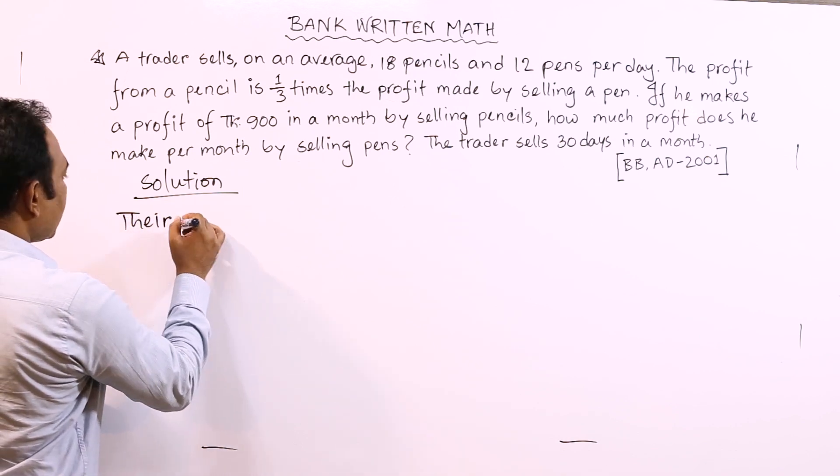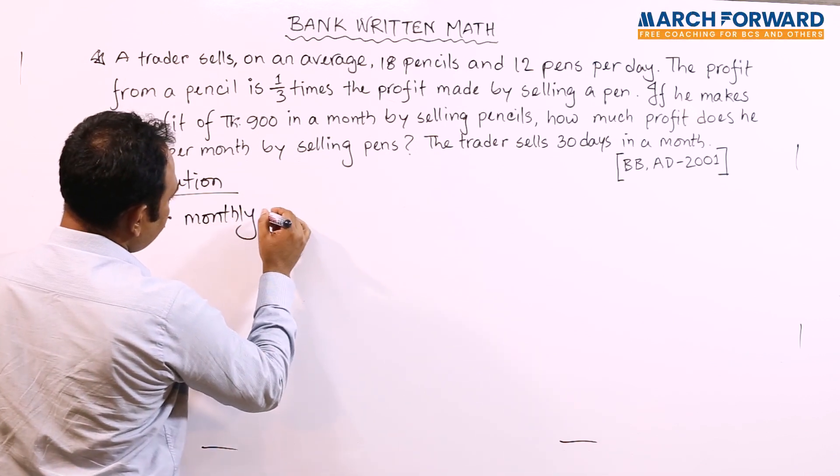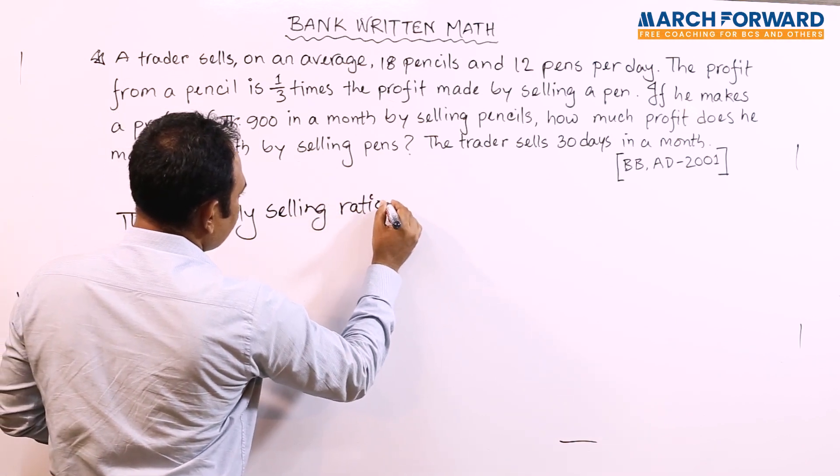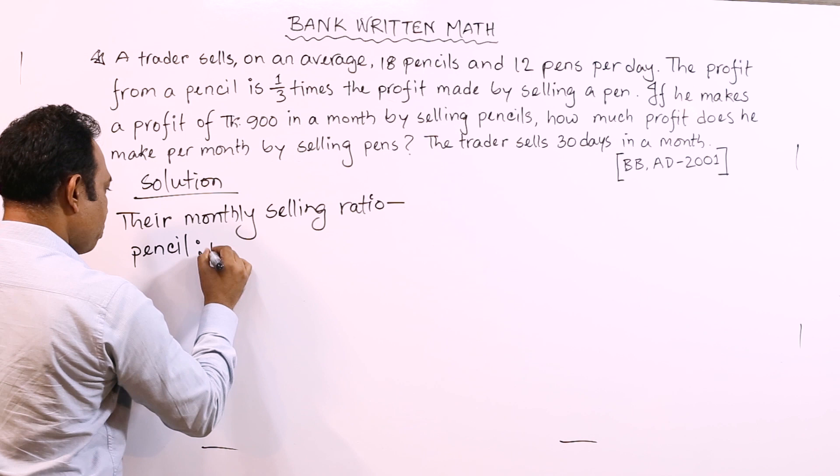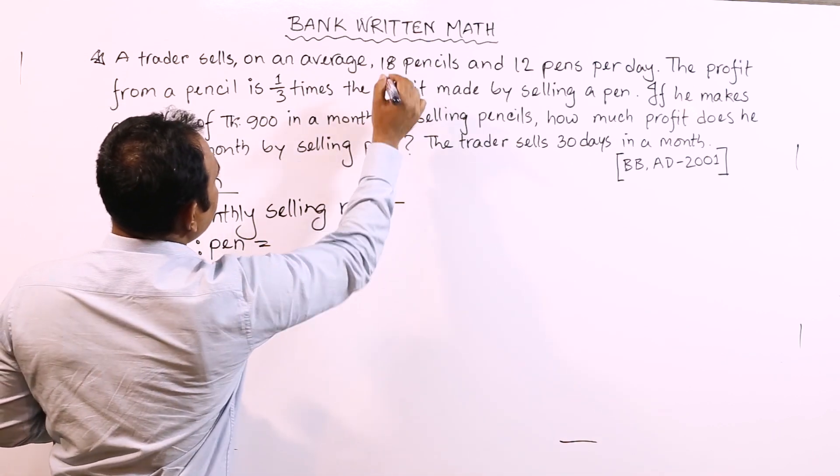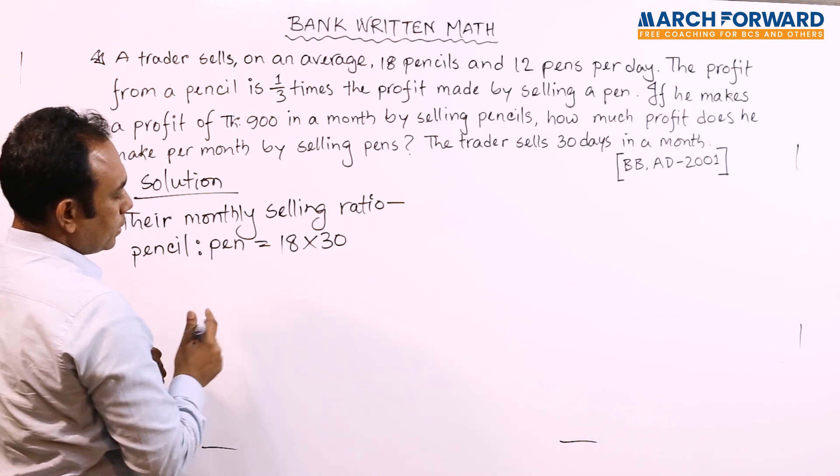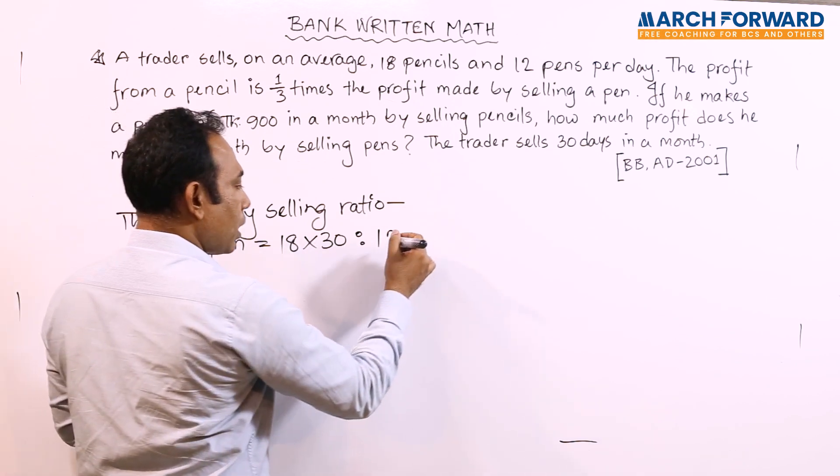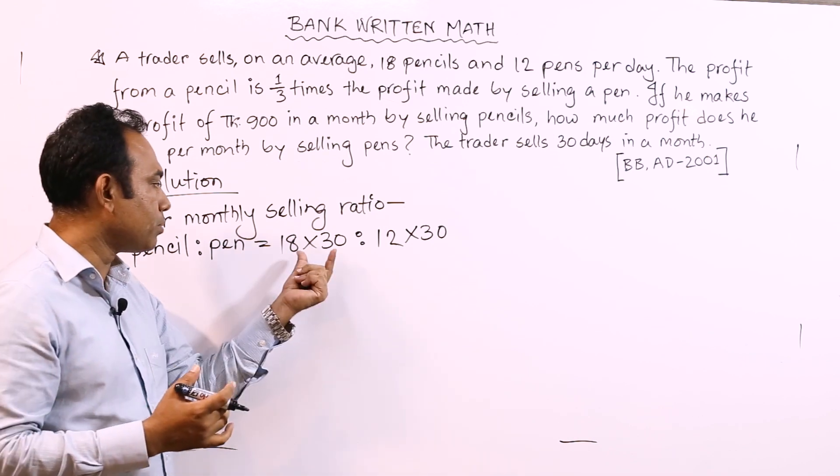Their monthly selling ratio - pencil to pen equals 18 times 30 to 12 times 30, which equals 540 to 360, which simplifies to 3 to 2.